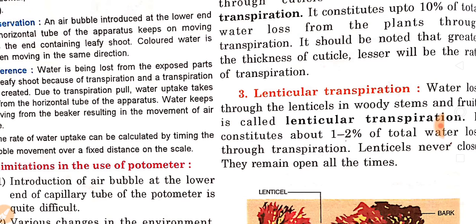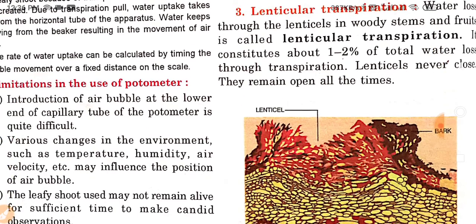Water loss through the lenticels in woody stems and fruits is called lenticular transpiration. It constitutes about 1 to 2% of total water loss through transpiration. Lenticels never close — they remain open at all times.